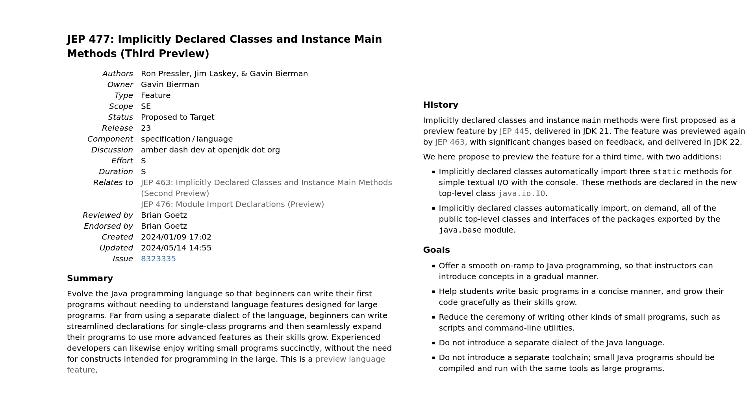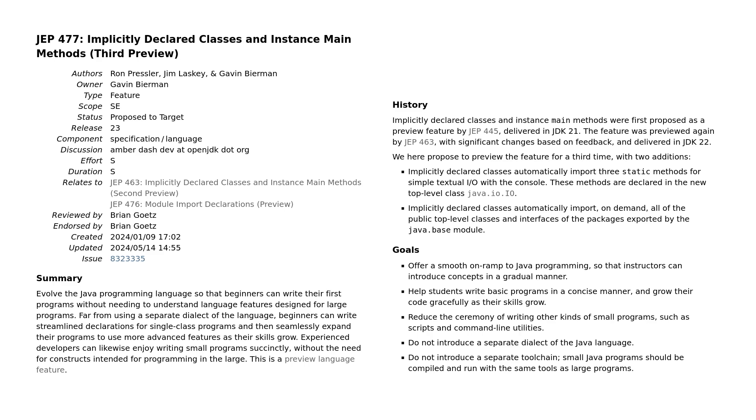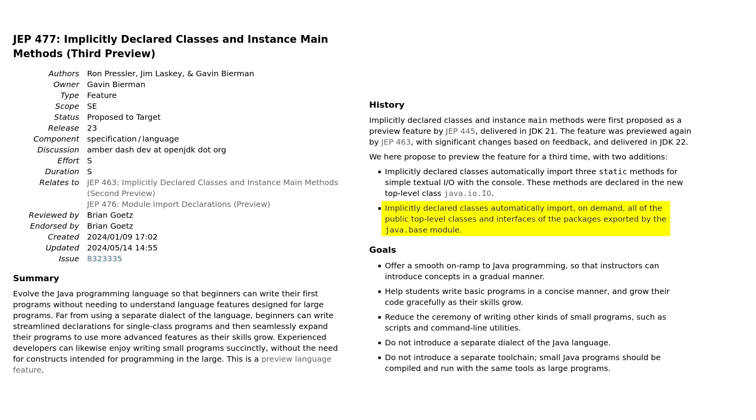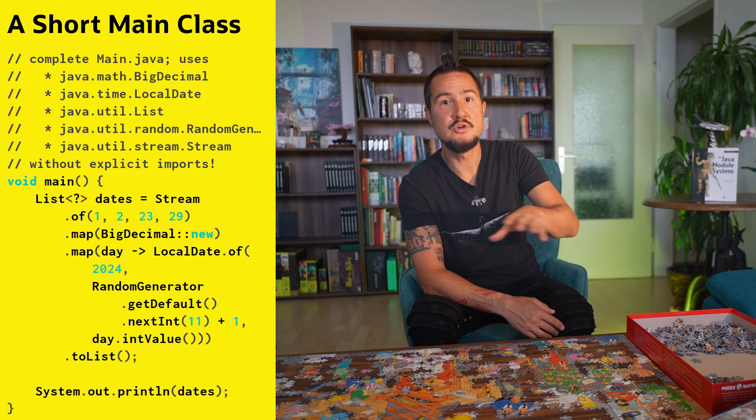On that topic, the proposal for a simplified main method and class was updated for 23 — more on that in a future video — to not only allow module imports, but to automatically import java.base if the main class isn't explicitly defined. That means if you just have a main method in the file, you need no import to use all of java.util, java.math, java.time, etc. And if you want to experiment with, say, XML, just add import module java.xml. I love it.